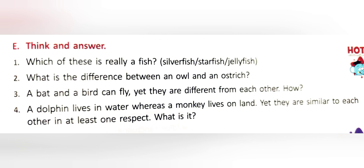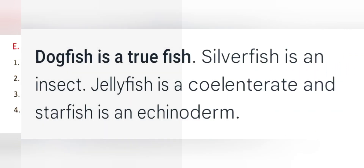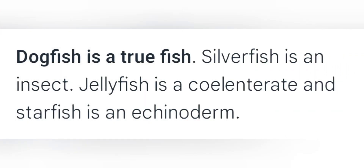Part E: Think and answer. Question one: Which of these is really a fish? Answer: Dogfish is a true fish. Silverfish is an insect, jellyfish is a coelenterate, and starfish is an echinoderm. So among the options, dogfish is the only real or true fish.